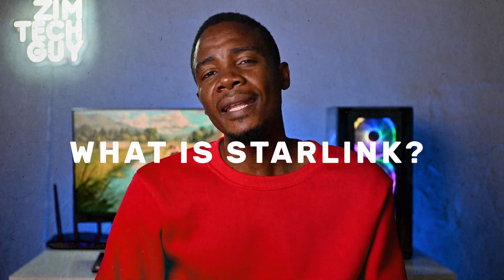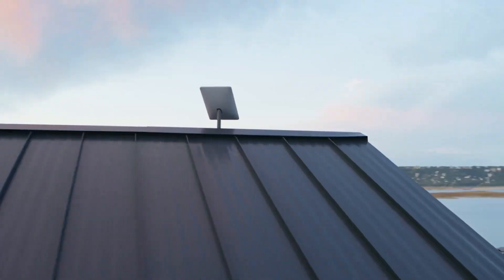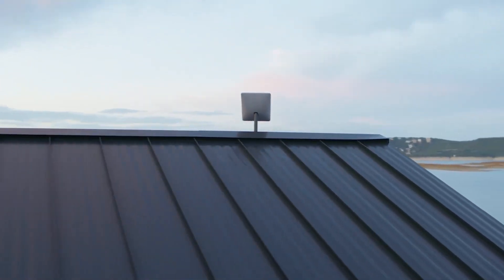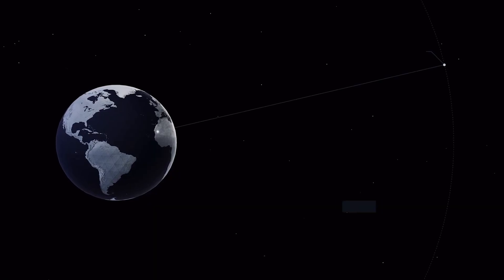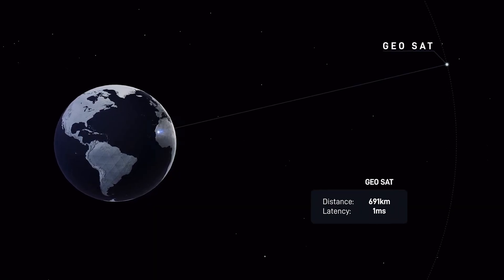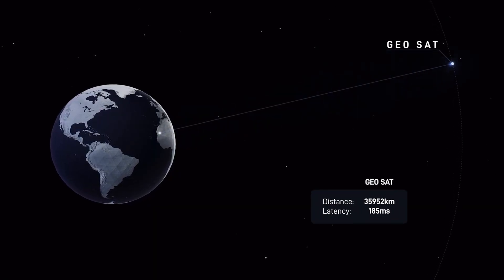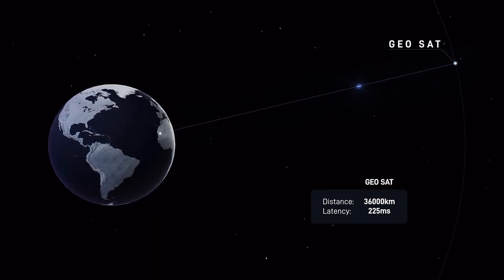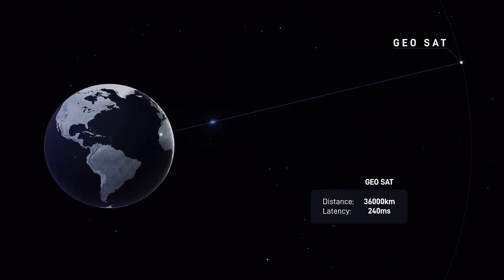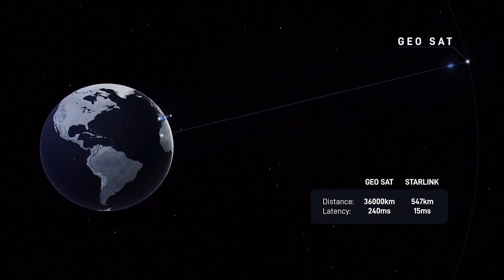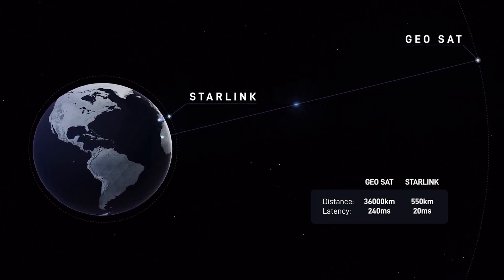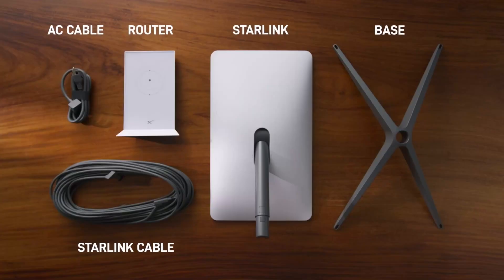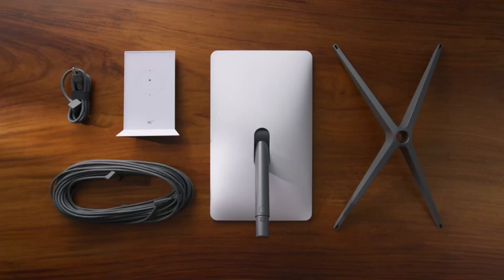First question: what is Starlink? Starlink is an American company, a subsidiary of SpaceX, a company founded by Elon Musk. They provide satellite-based internet services globally, and they were recently licensed to operate in Zimbabwe. To access Starlink internet, you need a kit — basically like a DSTV satellite dish — and you need to pay a subscription.